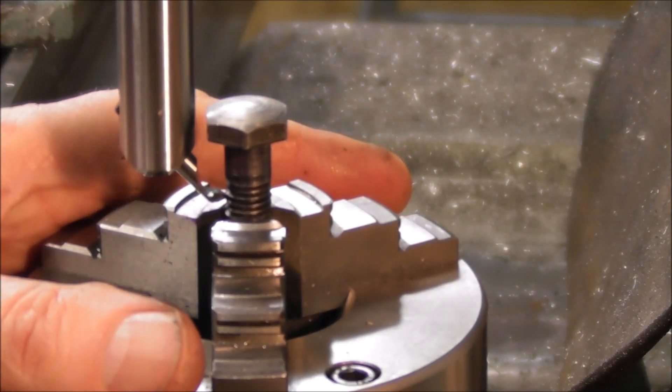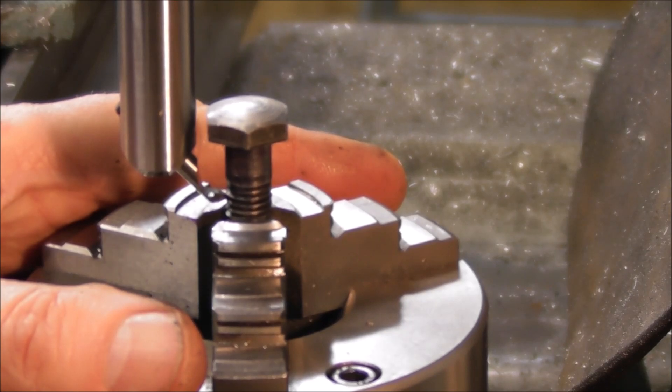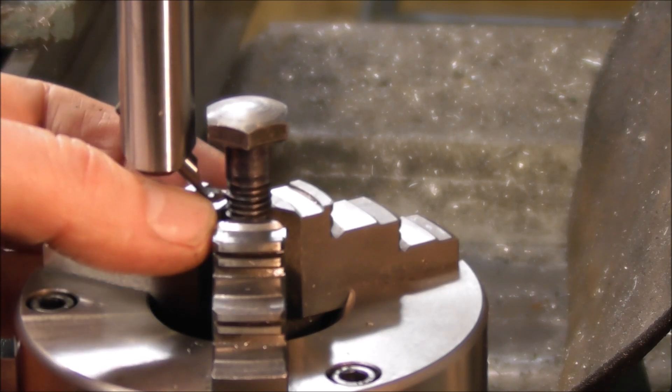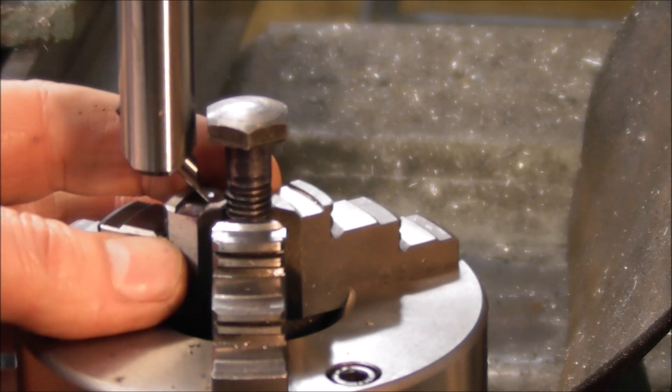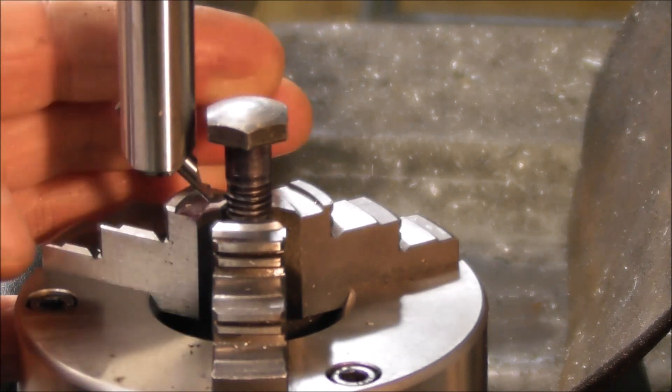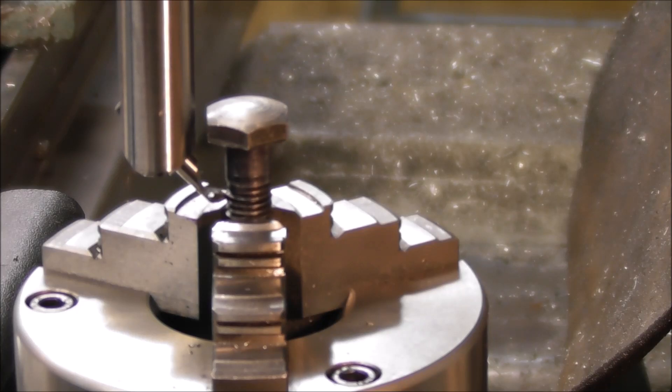Setup is easy. Put the bolt in the three-jaw chuck, set the pitch on the single nut adjustment on the scale to - in this case - 1.5mm pitch. Wind in the slideway until the cutter is inside the valley of the thread. Using the Z adjustment either with the knee or the quill until it's in line, and then I'm ready to go.